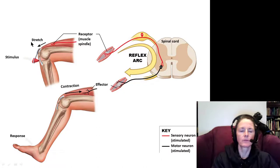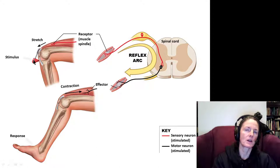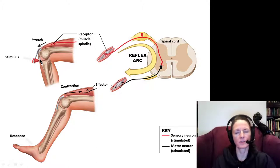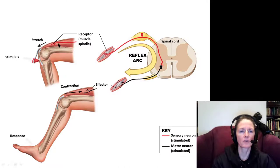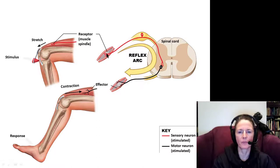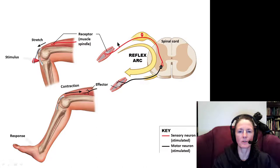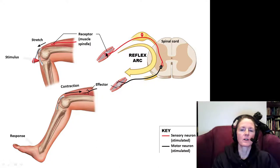The patellar reflex happens when somebody taps on the patellar tendon. In the doctor's office, the doctor uses a reflex hammer to hit the patellar tendon, causing a sudden stretch in the quadriceps muscle. The muscle spindle lies deep within the muscle belly and has special fibers called intrafusal fibers, while the surrounding fibers are called extrafusal fibers — our typical muscle cells. Sensory receptors are wound around elastic tissue, with sarcomeres on either end.